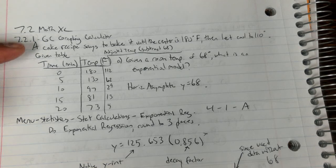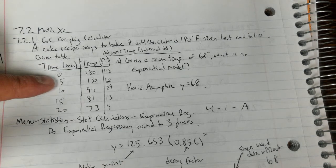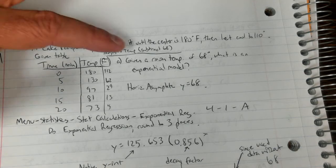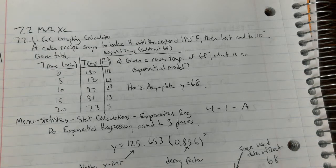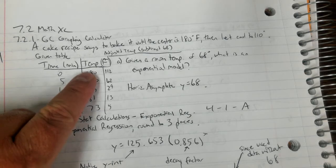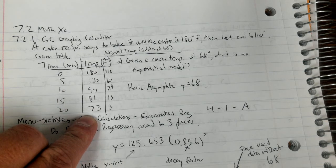You're given a table with your time and your temperature. Part A says you're given a room temperature of 68 degrees and you want to know what the exponential model is. Before you can do your exponential regression, you have to change these temperatures.